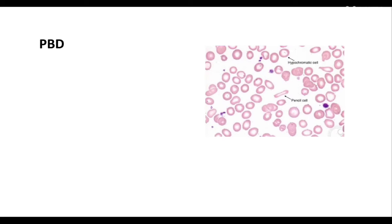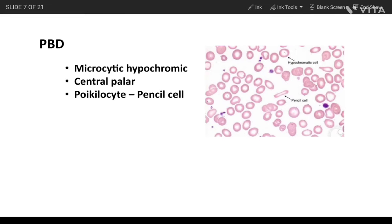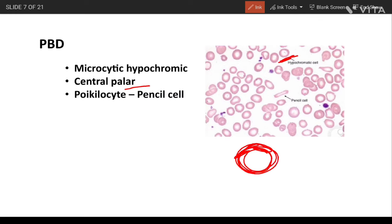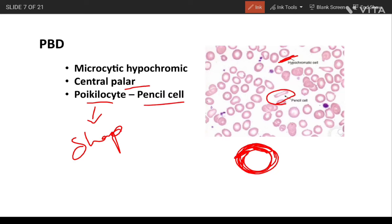On the peripheral blood smear, we can see the microcytic hypochromic condition with a central pallor — hemoglobin is distributed at the periphery with a large central pallor area. Poikilocytes — meaning different shapes of RBCs — are seen, like pencil-shaped cells. Treatment includes ferrous sulfate, ferrous fumarate, and ferrous gluconate.